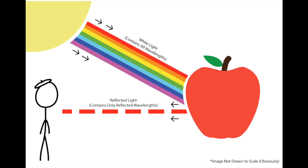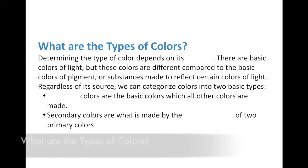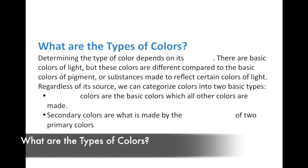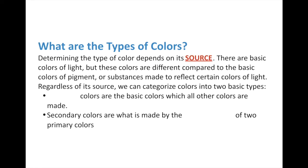When people are colorblind, the reasoning is that the receptors that collect these colors don't work properly. That's why colorblind people can't see colors - it's not because of the light, but rather their eye doesn't have the ability to accept those colors correctly. So, what are colors? Determining the type of color depends on its source. There are basic colors of light, but these colors are different compared to basic colors of pigment. Pigments are substances made to reflect certain colors of light.